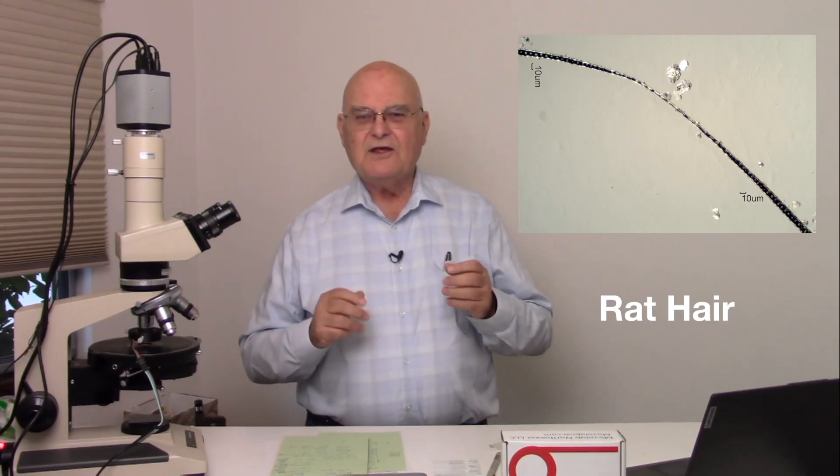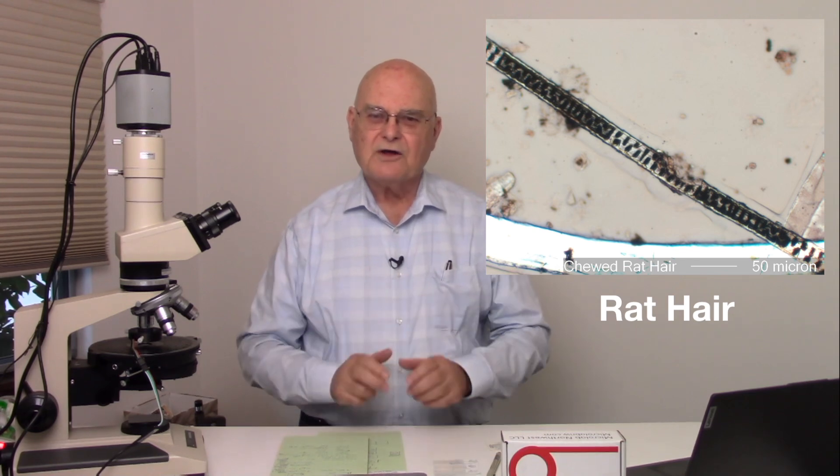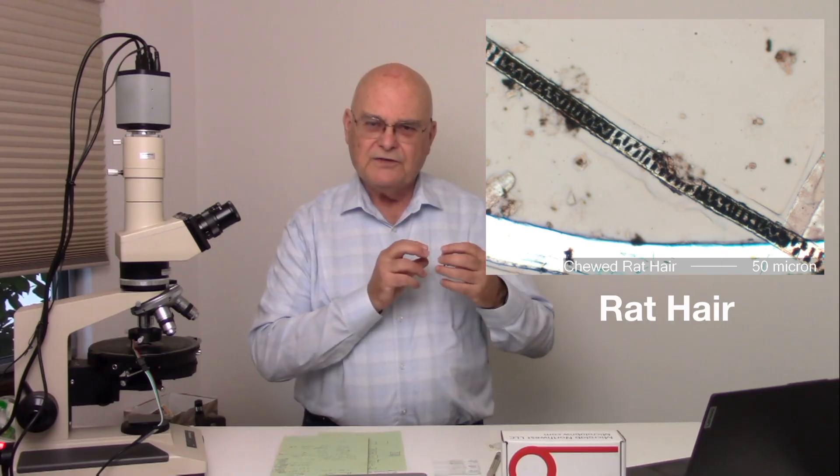Occasionally, we'll even see hairs from bats or rodents. Rodent hair has some nice characteristics. The pigment tends to concentrate in the center part of the hair, in what's called the medulla. And as you can see here, we have clumps of pigment in the center part, the medulla of the hair. It's very characteristic of rodents of all types. Rat hair has specific characteristics, as do mouse hairs. They're all going to be slightly different, but we can identify them.